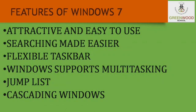Features of Windows 7. First, attractive and easy to use. Windows 7 has a very attractive appearance with colorful themes. Second, searching made easier. Using Windows 7, we can quickly search any file or folder in our computer. Third, flexible taskbar. The taskbar of Windows 7 is more flexible and application oriented.